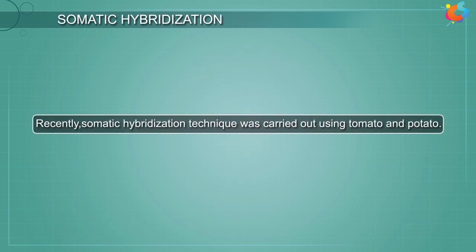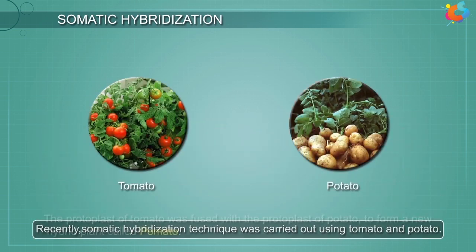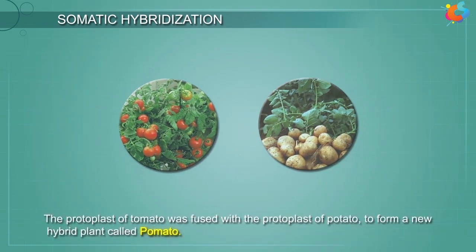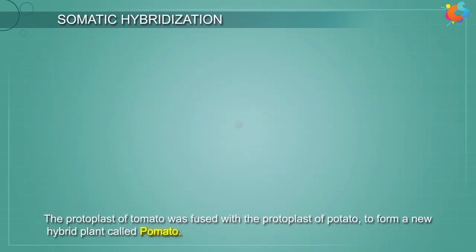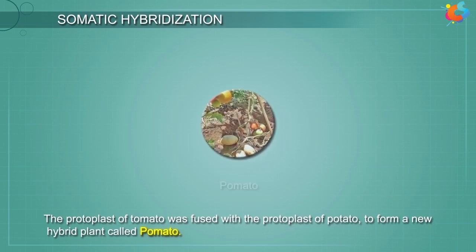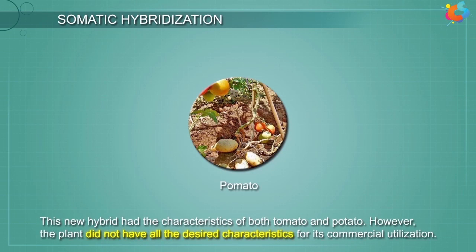Recently, somatic hybridization technique was carried out using tomato and potato. The protoplast of tomato was fused with the protoplast of potato to form a new hybrid plant called pomato. This new hybrid had the characteristics of both potato and tomato. However, the plant did not have all the desired characteristics for its commercial utilization.